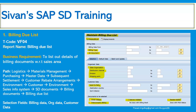It will pick up all the list of outbound deliveries which are due for billing. Here it is like the outbound delivery got created and then the billing has not been done. That means the entire outbound delivery is completed — the picking has been done, packing has been done, and the batch number has been maintained. PGI also might have been completed for that outbound delivery. Those will be listed in this particular transaction code, report VF04, the billing due list.